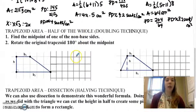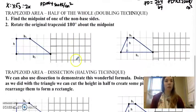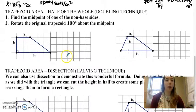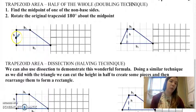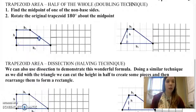All right, trapezoid area. Half of the whole. Find the midpoint of one of the non-base sides. Rotate the original trapezoid 180 degrees about the midpoint. All right, so it's talking about a non-base side would be either here or here. This is an easy midpoint to spot since it's straight up and down. This would be right in the middle. So if I go straight across, there's a midpoint right here as well. And we're going to rotate that.